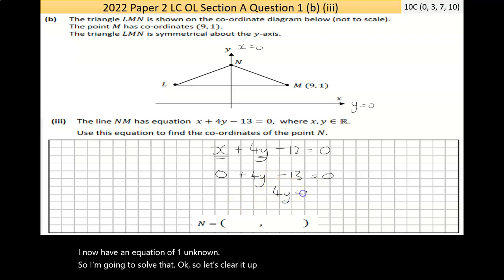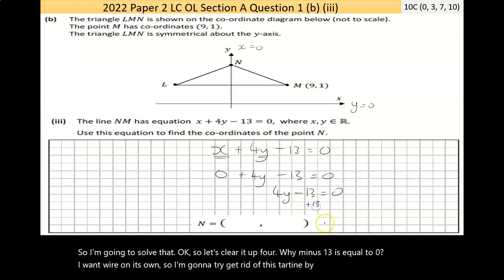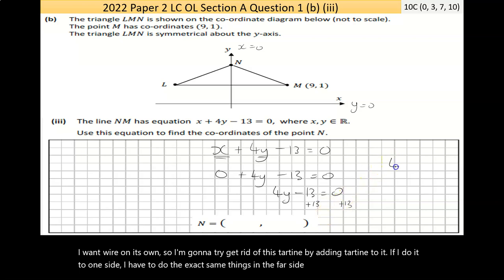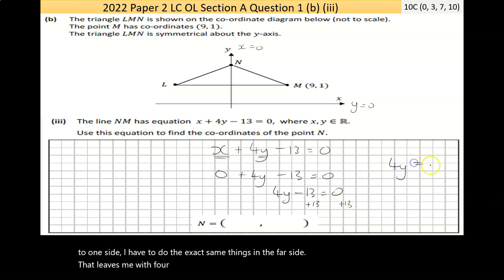So, I'm going to solve that. Let's clear it up. 4y minus 13 is equal to 0. I want y on its own. So, I'm going to try to get rid of this 13 by adding 13 to it. If I do it to one side, I have to do the exact same thing to the far side. That leaves me with 4y is equal to, now the 13 and the negative 13 have cancelled. 0 plus 13 is 13.